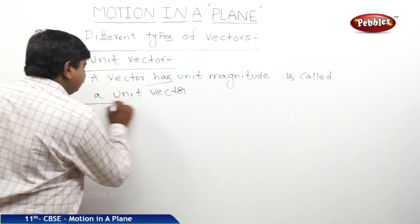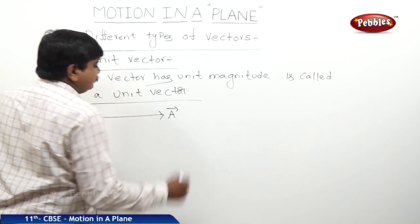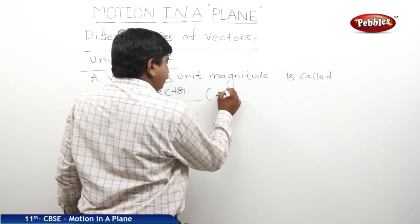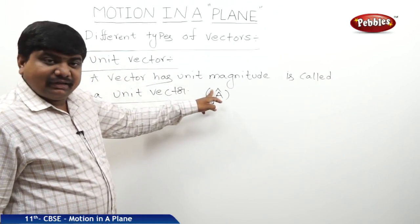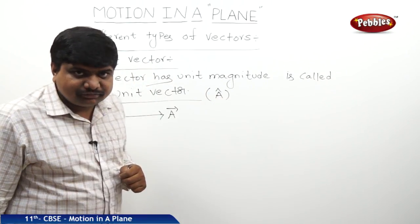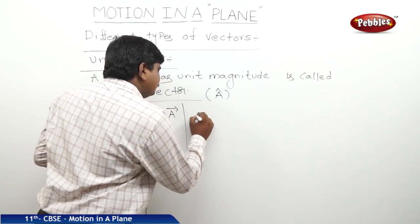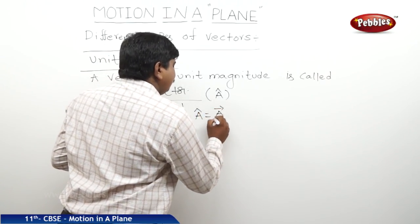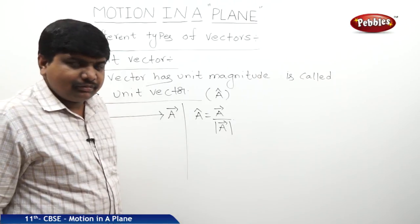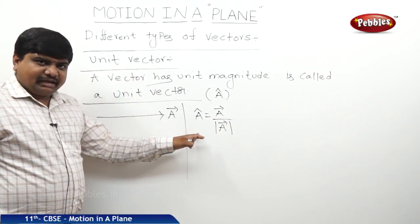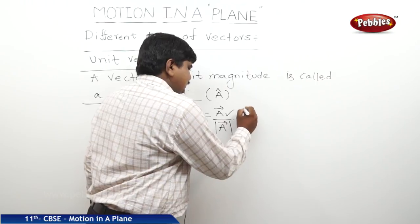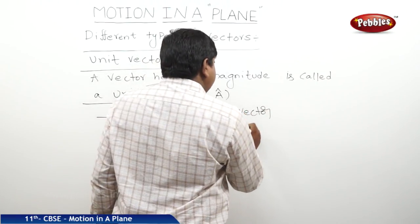Let us take a vector a bar. To represent the unit vector, we should keep the symbol like this, a cap. If you keep the cap symbol or hat symbol over any alphabet, it is representing the unit vector of that particular vector. So what is the way to find out the unit vector? a cap is equal to a bar by modulus of a bar. This is the way to find out the magnitude of a cap or the value of the a cap. So this a bar is a vector, this modulus of a bar is magnitude of vector.